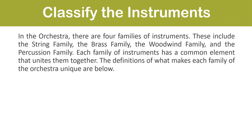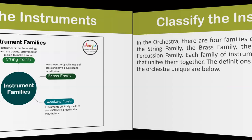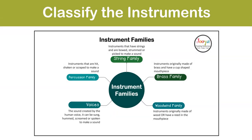In the orchestra there are four families of instruments: the string family, brass family, woodwind family, and the percussion family. Each family has a common element that unites them. The string family are instruments that have strings and are bowed, strummed, or picked to make a sound. The brass family are instruments originally made of brass and have a cup-shaped mouthpiece. The woodwind family are instruments originally made of wood or have a reed in the mouthpiece. The percussion family are instruments that are hit, shaken, or scraped to make a sound. Voices are the sound created by the human voice — sung, hummed, screamed, or spoken.